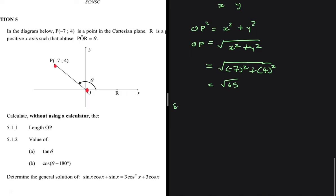Moving to 5.1.2a, we need to find the value of tan of theta. So what is tan of theta by definition? Tan of theta equals the opposite divided by the adjacent, the opposite being y and the adjacent being x.